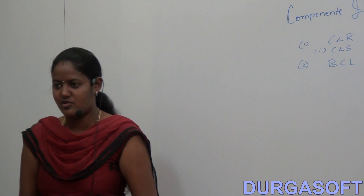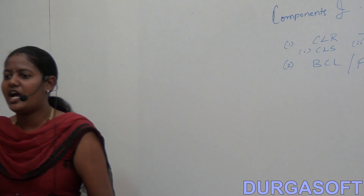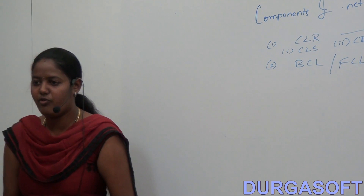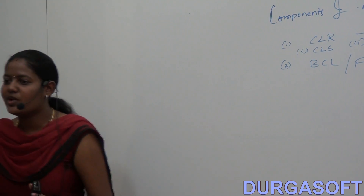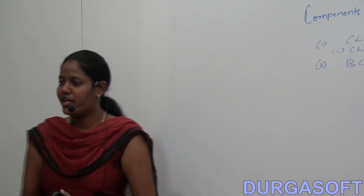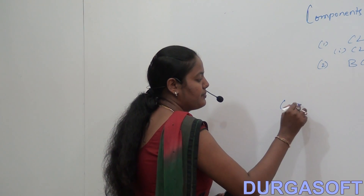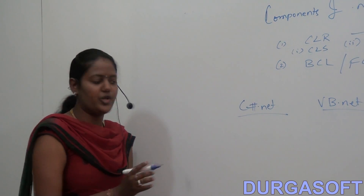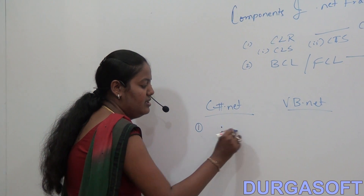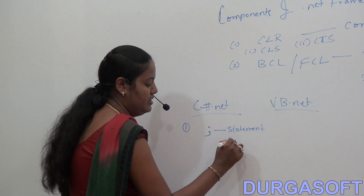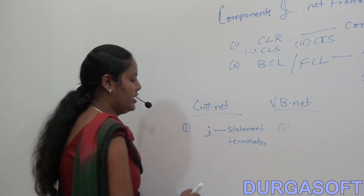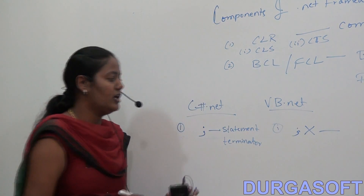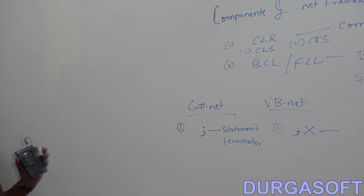In .NET we have several languages like C# .NET, VB .NET, VC++ etc. Each language follows its own syntax, and one language cannot understand the other language's syntax. For example, in C# .NET every statement must end with a semicolon — semicolon is the statement terminator. But in VB .NET, each statement should not end with a semicolon. So syntax rules differ from language to language.